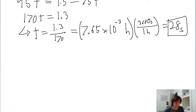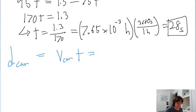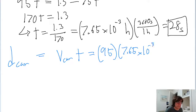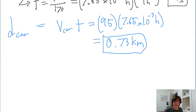The problem also asked how far the car traveled in this case. The distance the car traveled equals the speed of the car multiplied by the time: 95 kilometers per hour multiplied by 7.65 times 10 to the power of negative three hours. Putting this into a calculator gives a distance of about 0.73 kilometers. That is how far the car traveled when they're going in opposite directions.